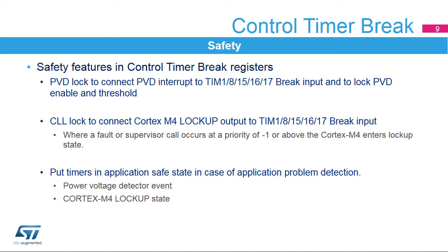The control timer brake register contains the control bits related to safety and robustness. Two control bits steer certain error detection events to the timer's brake inputs. This allows timer outputs to be placed in a known state during an application crash. Once programmed, the connection is locked until the next system reset.